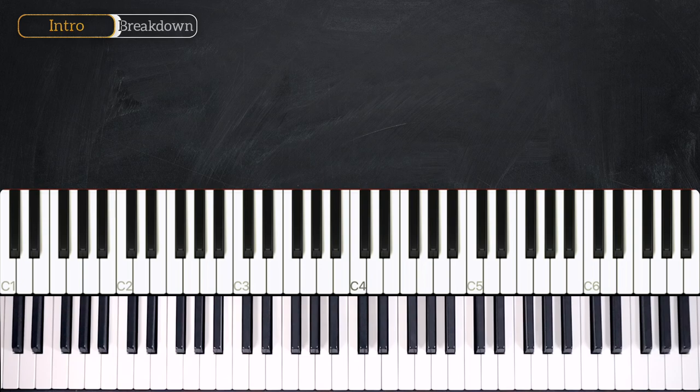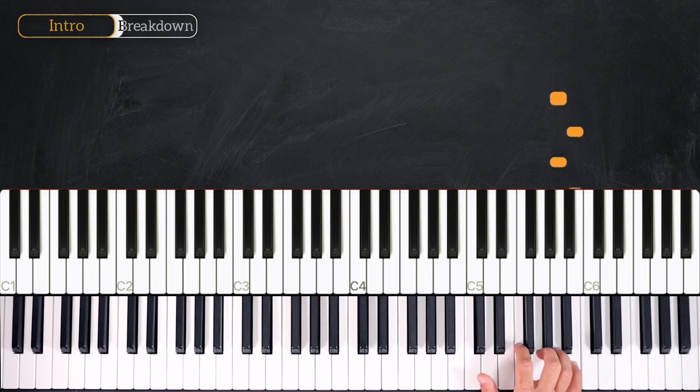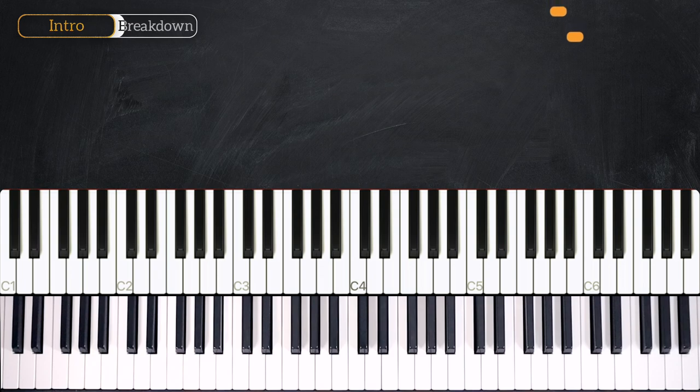Okay, so the introduction is really short, just one bar long. Like this. One, two, three, four. We just play B, A, B, A, B, A and then there is a silence on the fourth beat. Together. Three, four, one, two, three, four. Very good.